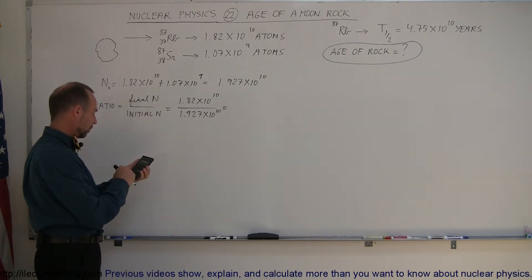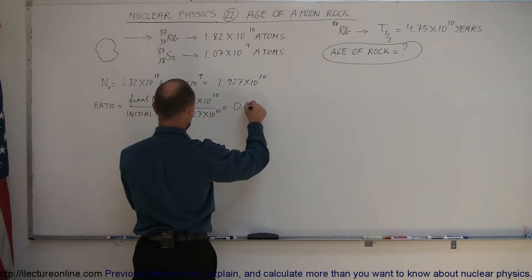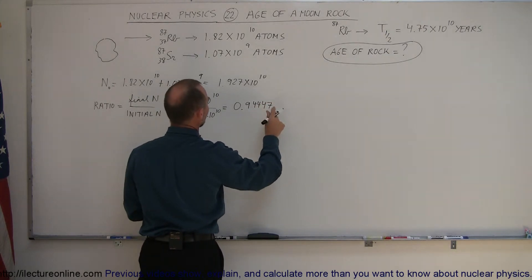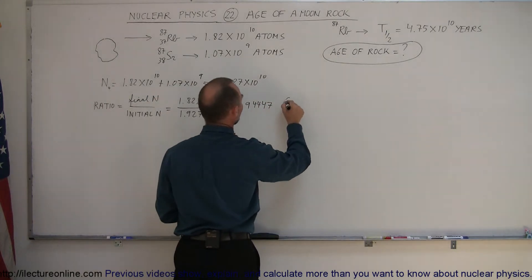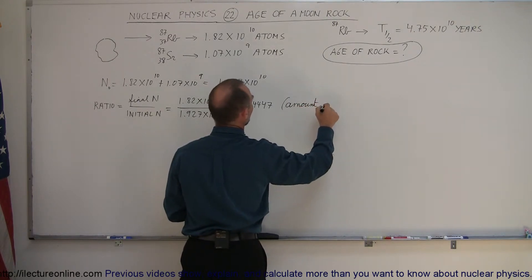Okay, so 1.82 divided by 1.927 equals, and so we'll have 0.94447. That would be the amount left from the original rubidium that was there. Amount left.